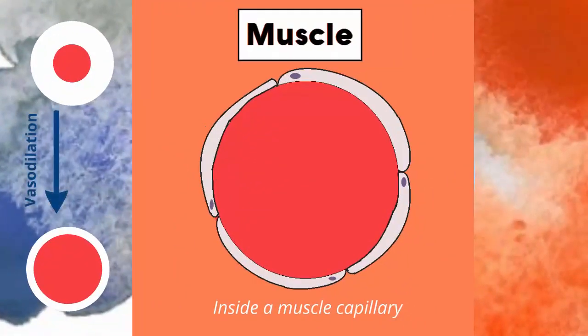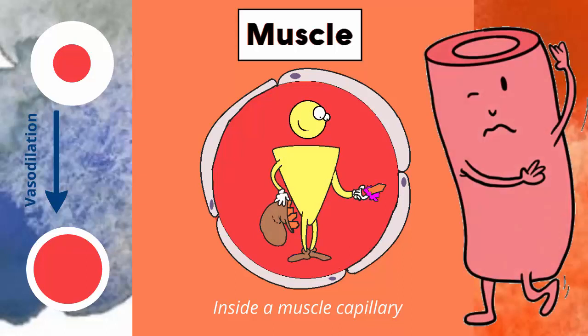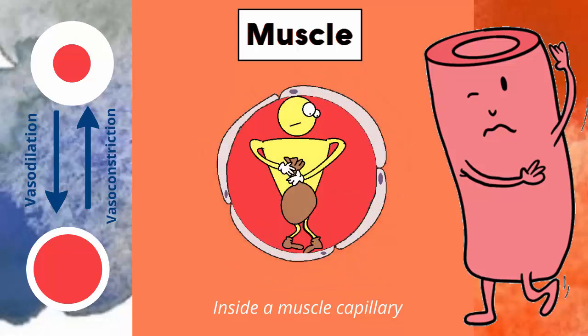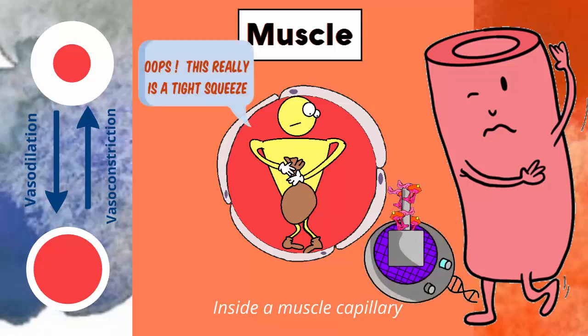Vasodilation allows blood to flow through effortlessly, and this facilitates deliveries. When the nitric oxide is missing, the blood vessels are taut because vasoconstriction is occurring. This makes it hard for insulin to make deliveries, and when sugar isn't delivered, sugar levels spike, causing all sorts of new troubles.